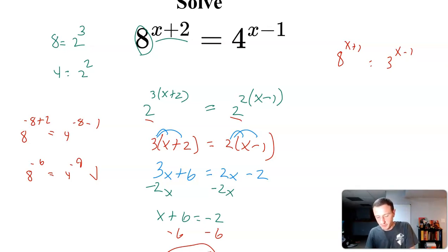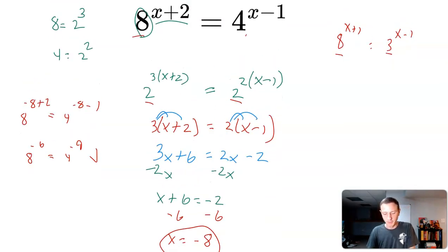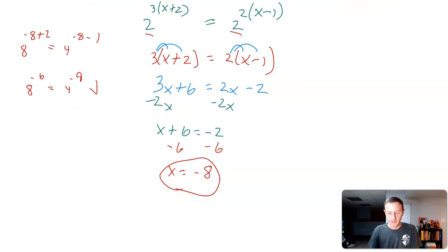We're going to have to do something a little bit different because I can't rewrite these with the same base. 3 to some power and then 3 to some power to get 8—that's not going to work. So luckily, with this one, we were able to do that. We were able to rewrite 8 and 4 as a base of 2.